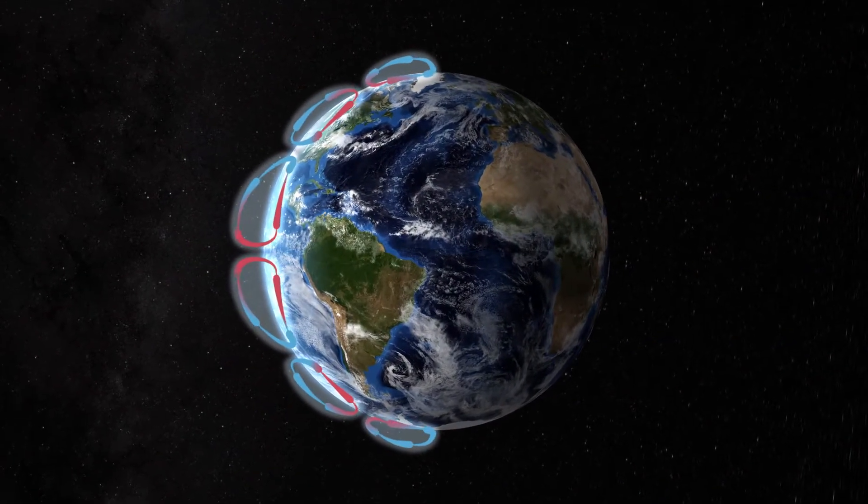This would be how our atmosphere works if our Earth didn't rotate. When we add rotation, the large overturning circulation breaks up into cells, or three smaller circulations in each hemisphere.